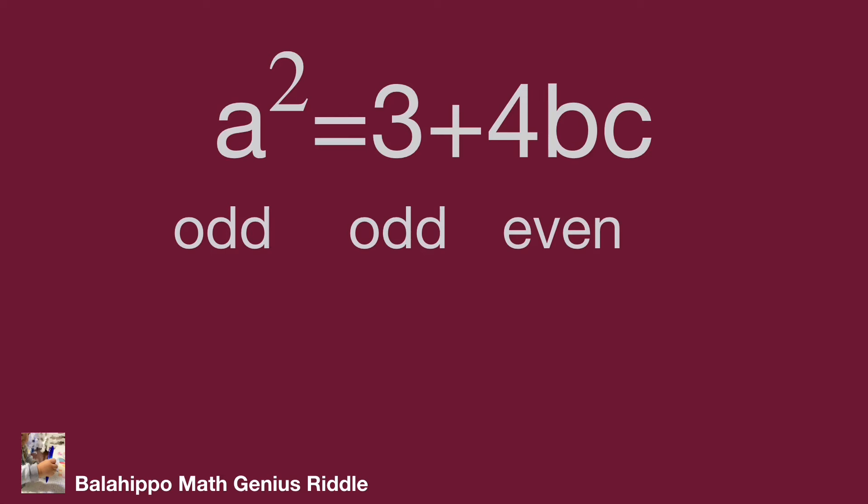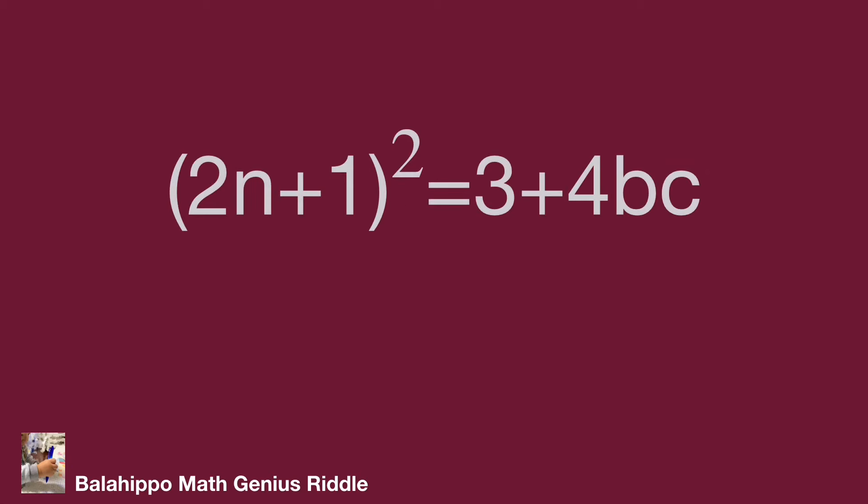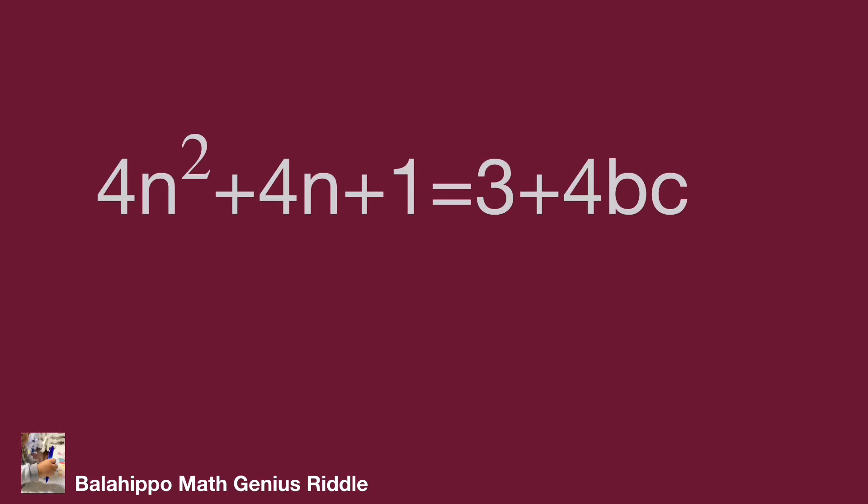Then we define a equals 2n plus 1, where n is a positive integer. Substitute a equals 2n plus 1 into the equation. Then develop the square as 4n squared plus 4n plus 1.